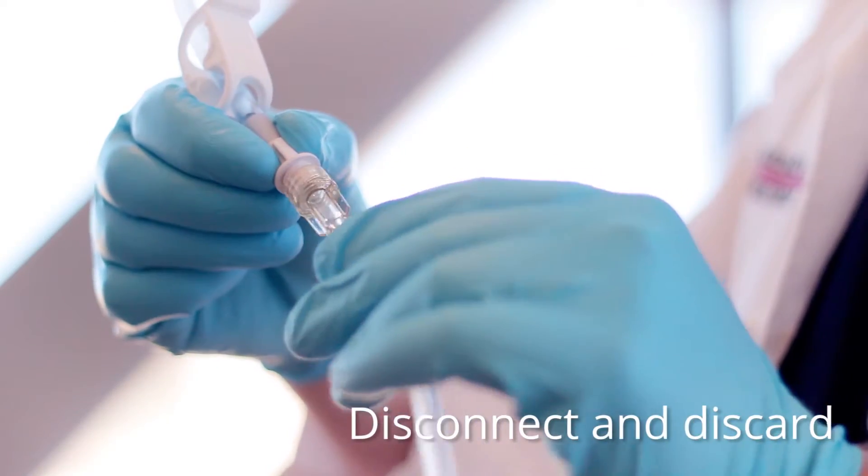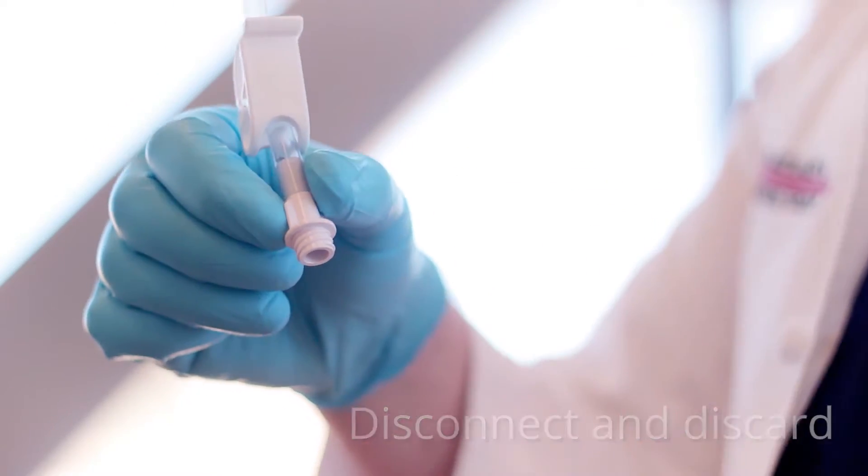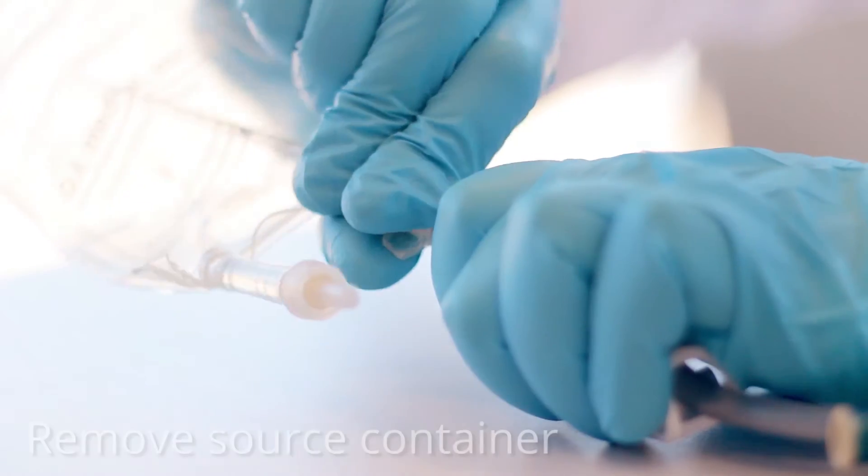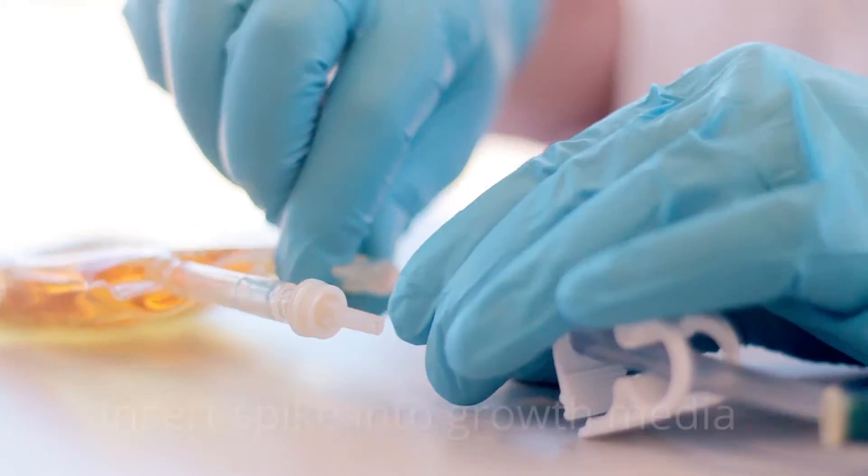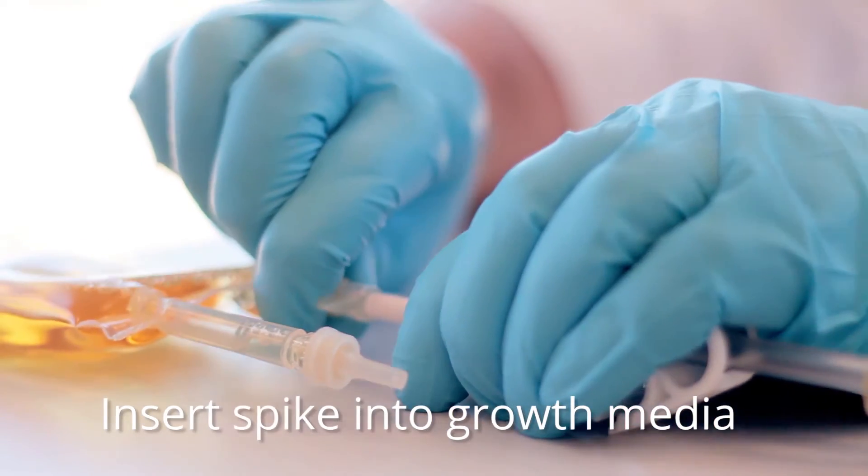Disconnect and discard the 18 inch transfer tubing and needle. Remove and discard the empty source container. Insert the spike into the bag of GrowMed growth media.